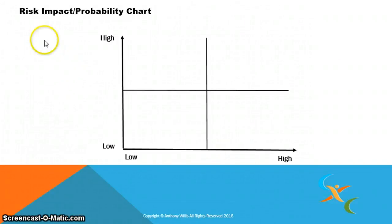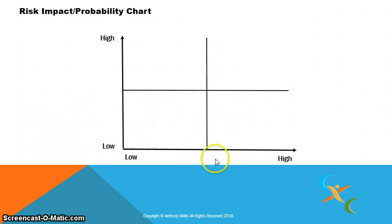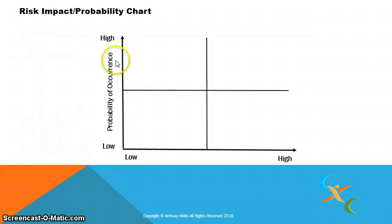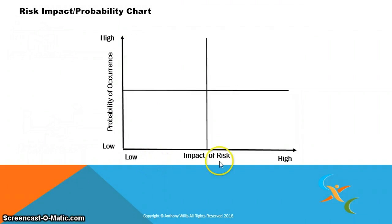Hello. In this video we look at the risk impact probability chart as it relates to the Guyana education sector plan. In this matrix, we measure the probability of occurrence along the vertical axis from low to high. If it's down here, the probability of it happening is very low; if it's up here, it's pretty high. And on the x-axis, we measure the impact of risk.